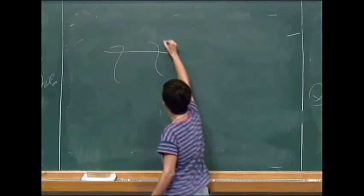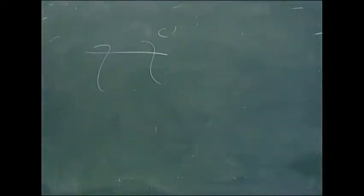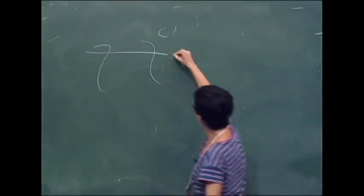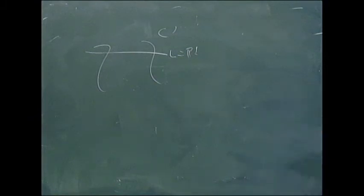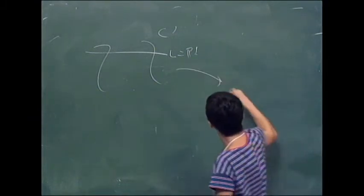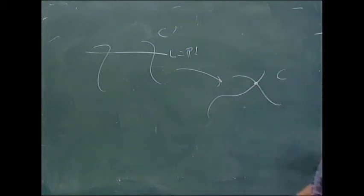For instance, if we have a C-prime where a P1 meets the rest of the curve in only two points, that is not a stable curve. But contracting this to a point gives us C, which is the stable one. In this picture, C-prime is the curve that is stable equivalent to C.